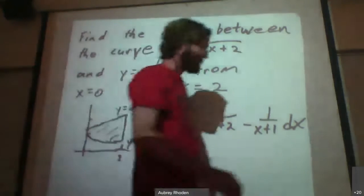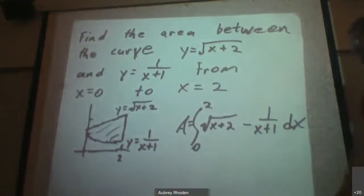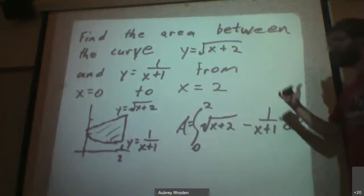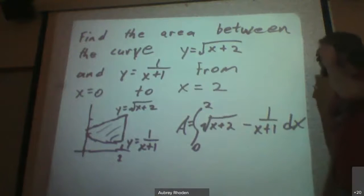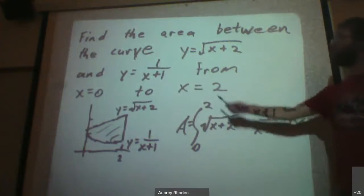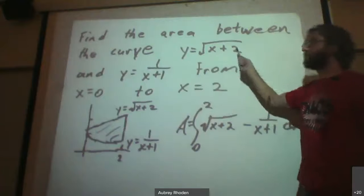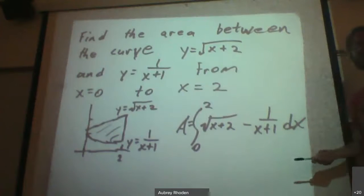If you want to figure out which one's on top and which one's on bottom, because remember it's top minus bottom, just start plugging boundary points into these things and see which one is really bigger. So if I plug zero into this one, I'm just going to get one. If I plug zero into this, I'll get the square root of two, which is bigger than one.